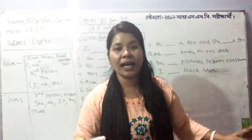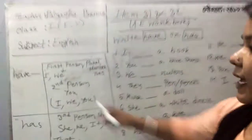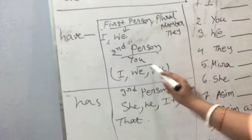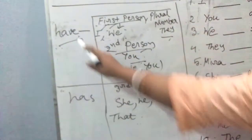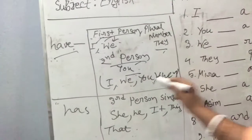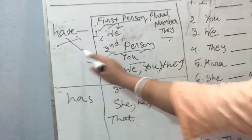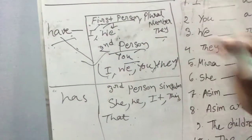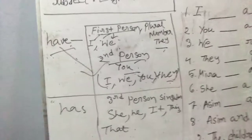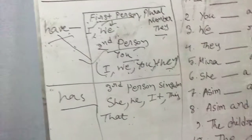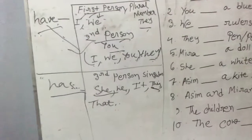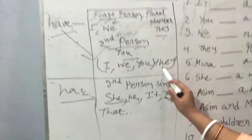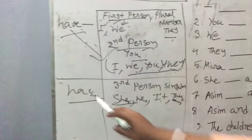Please have a look at the board. 'Have' is for first person — I, we — and second person — you — and also 'they'. So: I, we, you, they — use 'have'. After 'I' put 'have', after 'we' put 'have', after 'you' put 'have', after 'they' put 'have'. For 'has': after she, he, it, this, that — put 'has'.